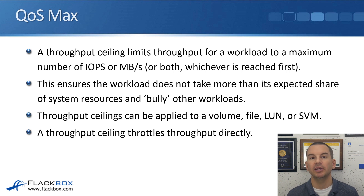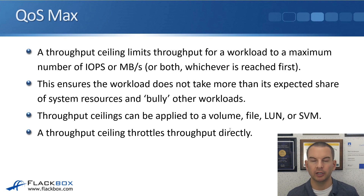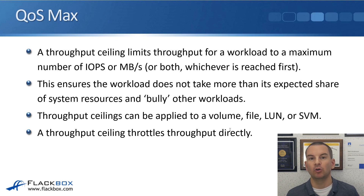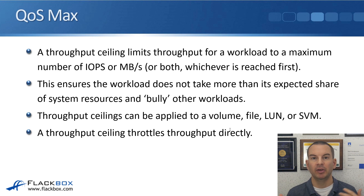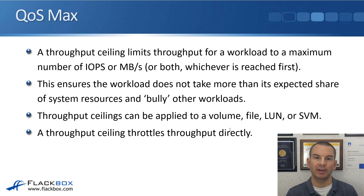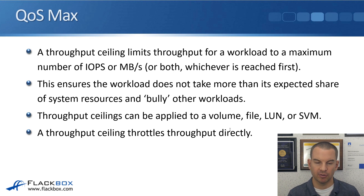Throughput ceilings can be applied to a volume, a file, a LUN, or an SVM. A throughput ceiling throttles throughput directly, meaning that if you set a limit on a volume, for example, it will limit that volume directly and stop it from using too many resources.